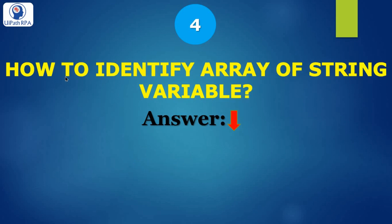How to identify an array of string variable? The answer is: String followed by brackets. This shows that it is an array of string variable. Similarly, if we have an array of integer, you write Integer32 followed by brackets.